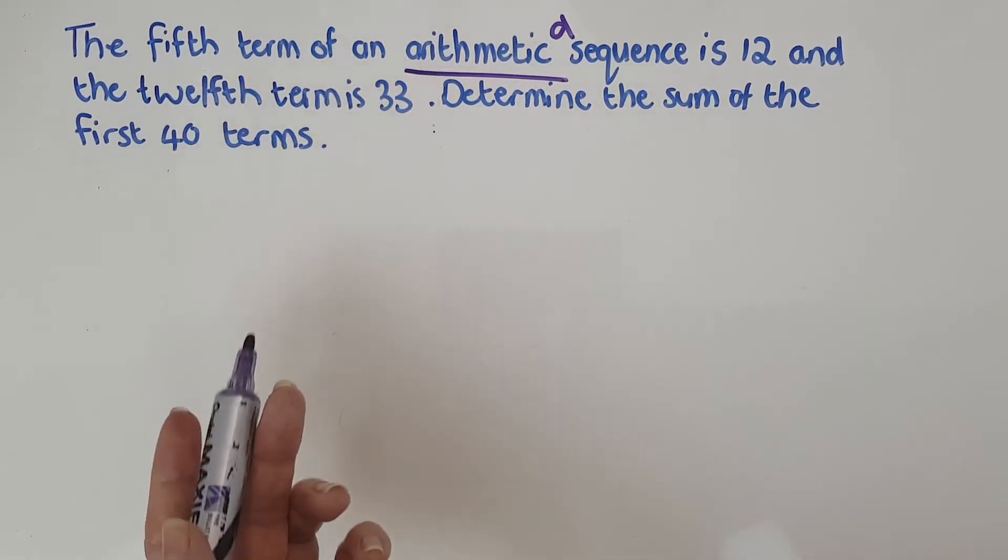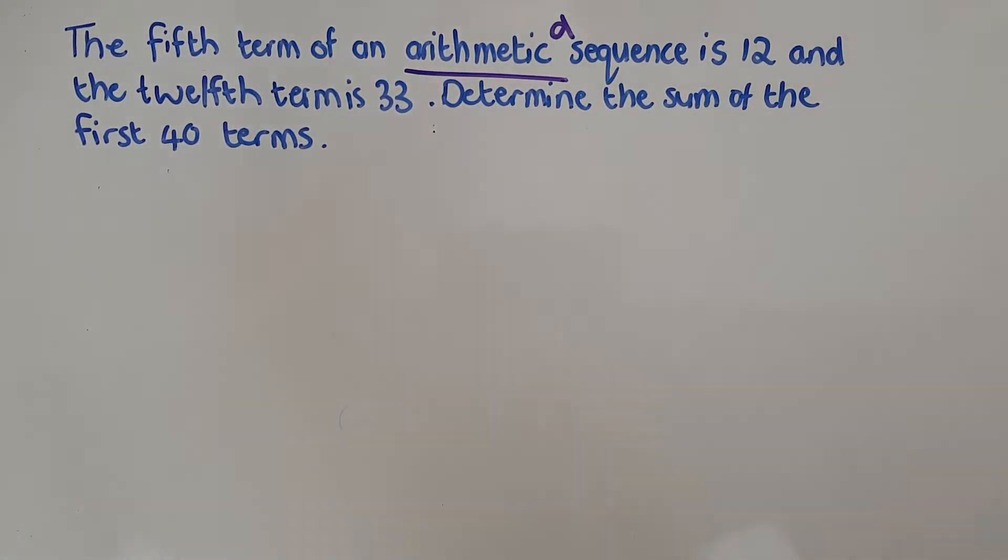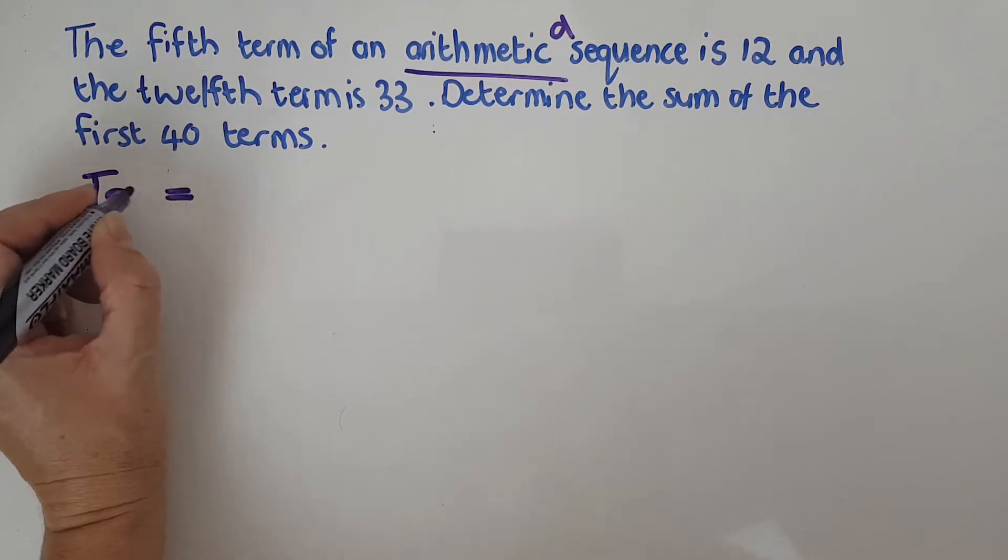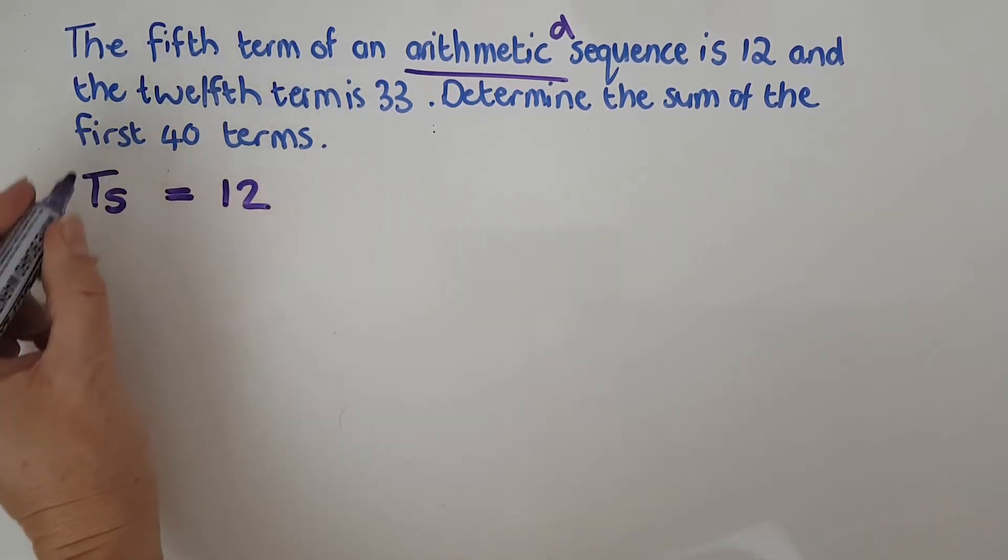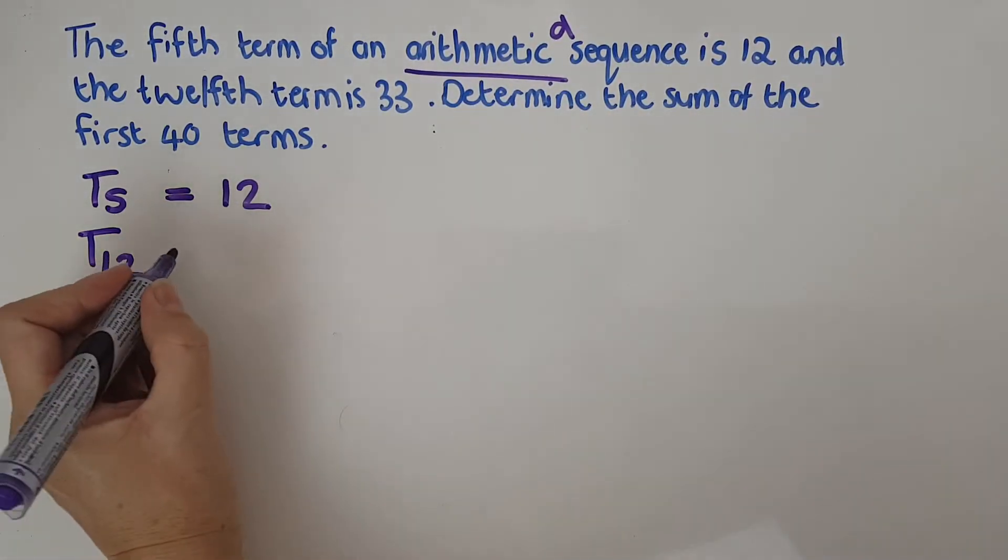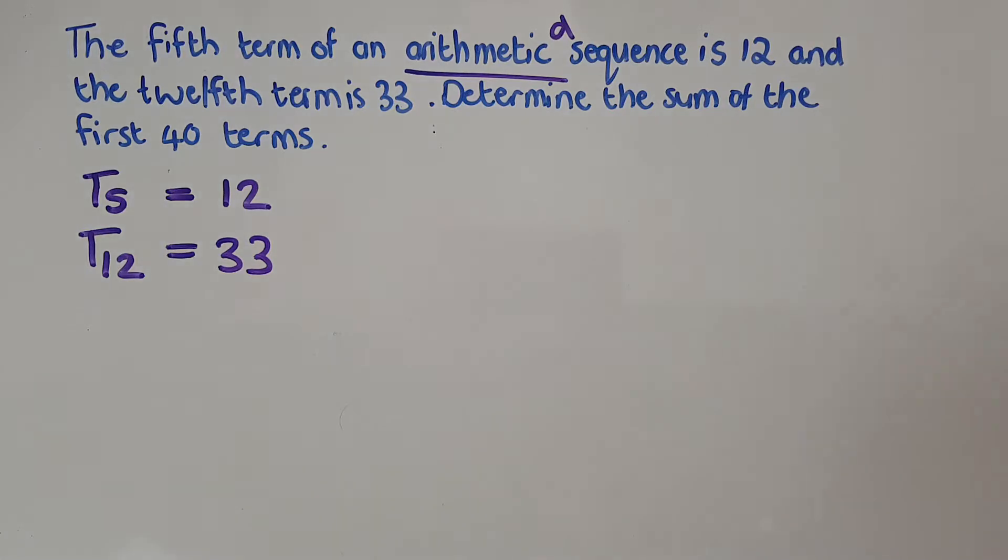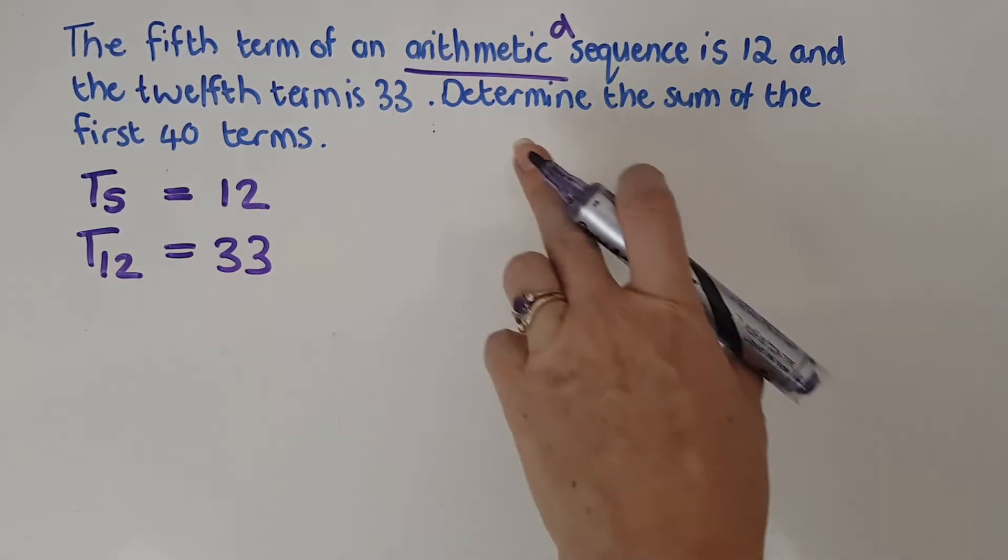t5 is 12 and t12—that's confusing, you've got two lots of 12—that is 33. All right, now I'm back in the land of the living in terms of math stuff I can actually work with. Determine the sum of the first 40 terms.